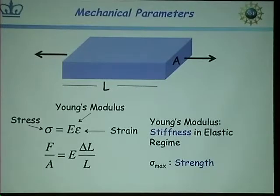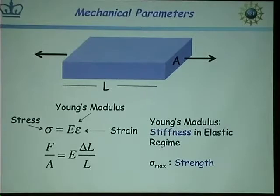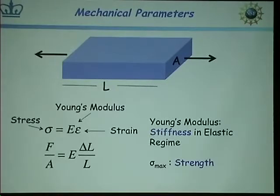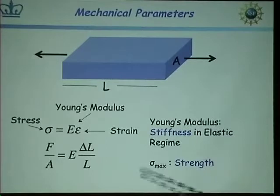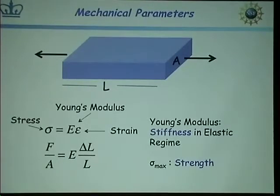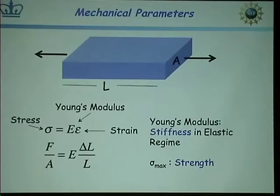In the elastic regime, you stretch the material, let it go, and it goes back — it's the same material. If you bend a piece of metal a little bit, it bends right back. If you bend it too much, it stays bent — that's entering the plastic regime where things have rearranged inside the material. The other important thing is the maximum stress the material can withstand before it breaks — that's called the strength. In scientific circles, stiffness and strength are sometimes interchanged when they shouldn't be. High Young's modulus is stiffness, not strength. Strength is how much can you pull it until it breaks.